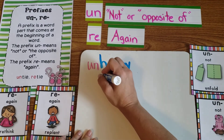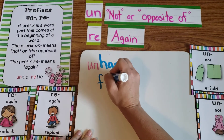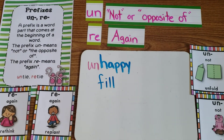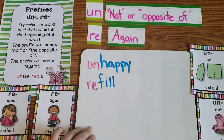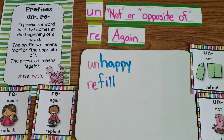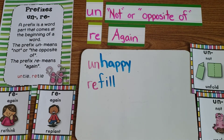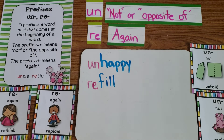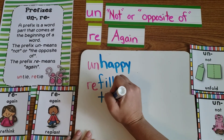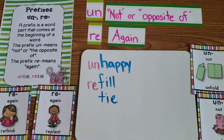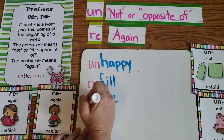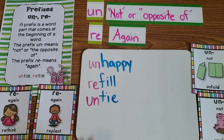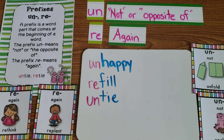Next we have the word 'fill,' and if we add the prefix 're' to it, we now have the word 'refill,' which means fill it up again. When you refill something, you're filling it again. Next we have the word 'tie' — one of the examples I used — and we're going to add the prefix 'un' in front of it. So now it means to untie it, to not tie it. We're going to take it apart and untie it.